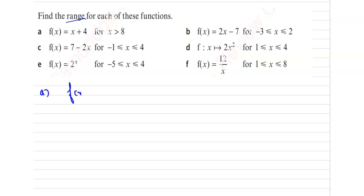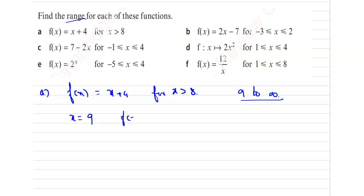First one is given as f of x equal to x plus 4 for x greater than 8. So, x greater than 8 means from 9 to infinite value, any value we can take. For this domain, we have to find the range. First, take x equal to 9. So, f of x will be 9 plus 4, which is 13.